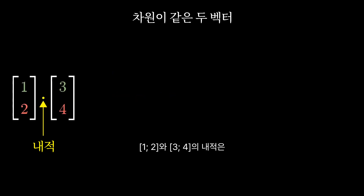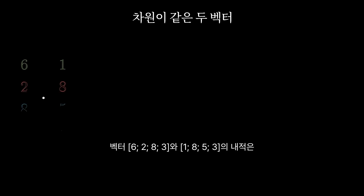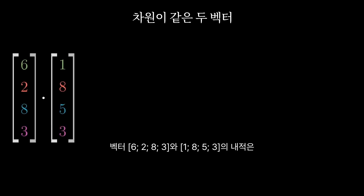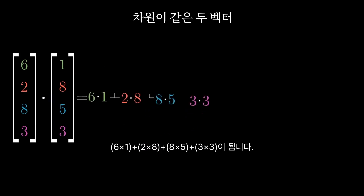So the vector [1, 2] dotted with [3, 4] would be 1 times 3 plus 2 times 4. The vector [6, 2, 8, 3] dotted with [1, 8, 5, 3] would be 6 times 1 plus 2 times 8 plus 8 times 5 plus 3 times 3.